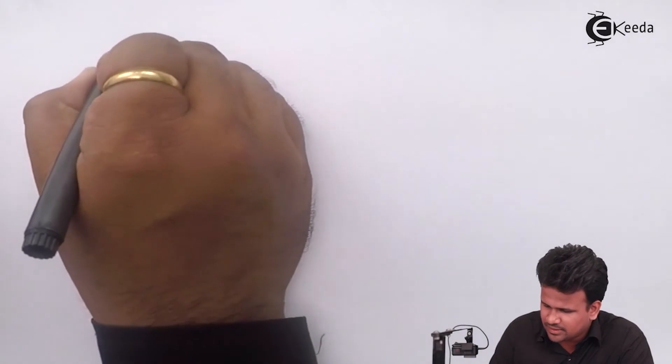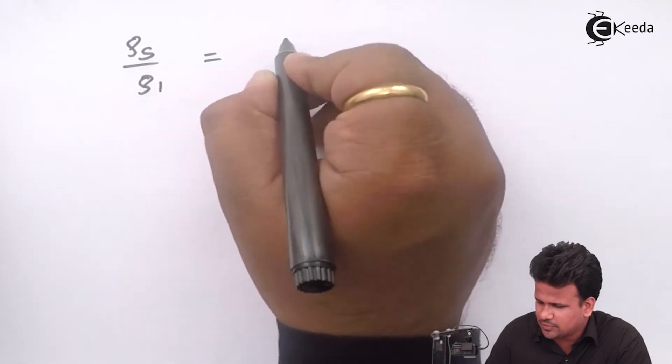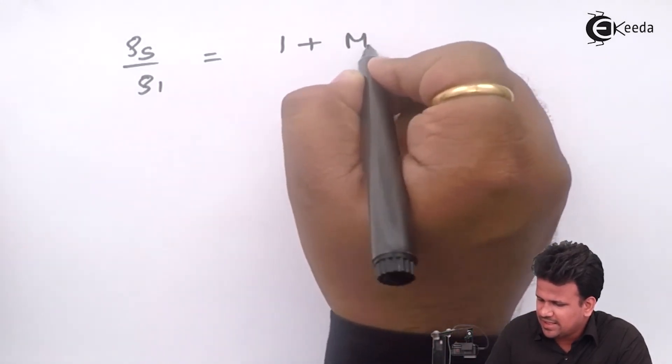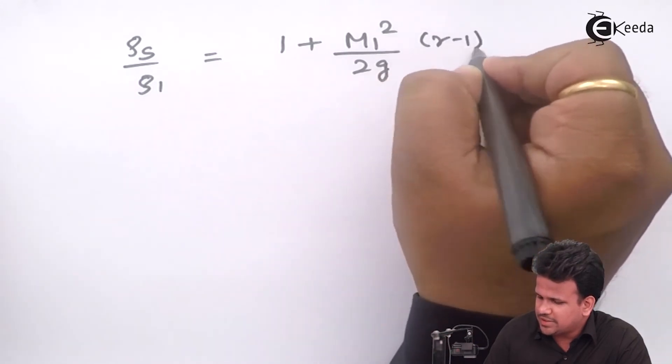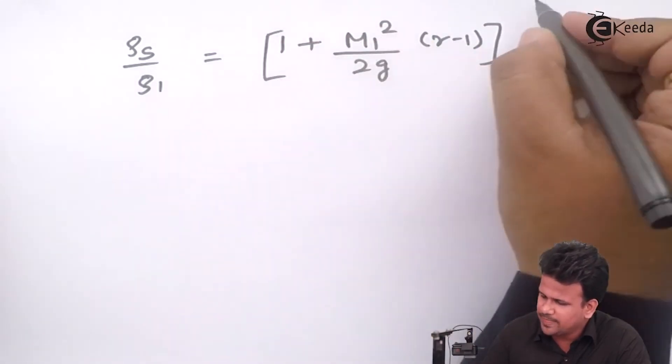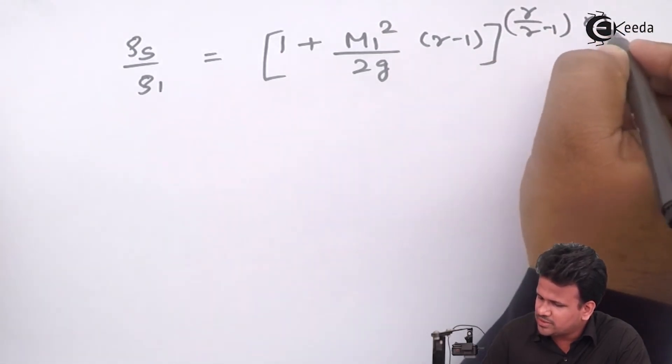After taking the root, rho S upon rho 1 equals [1 plus M1 squared by 2g times (gamma minus 1)] raised to (gamma minus 1) over gamma squared.